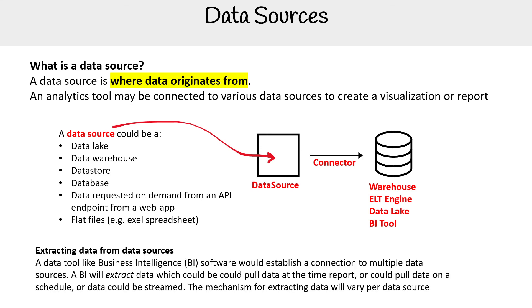When extracting data from data sources, a data tool like business intelligence software would establish a connection to multiple data sources. The BI tool would extract data, which could be pulled at the time of a report, pulled on a schedule, or streamed. The mechanism for extracting data will vary per data source, so there are a few different ways it can work.